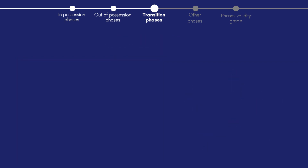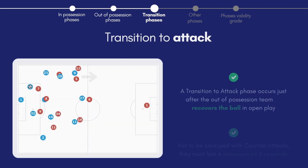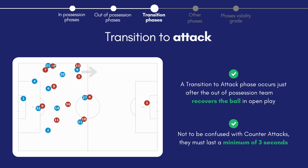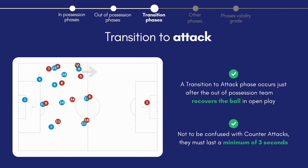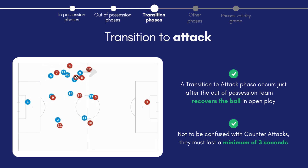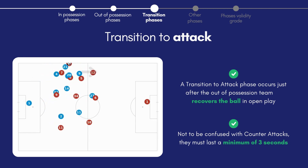The transition to attack occurs immediately after a team regains possession following a turnover or contested play. Teams can either go forward and exploit a counter-attacking opportunity or go backwards and rebuild.